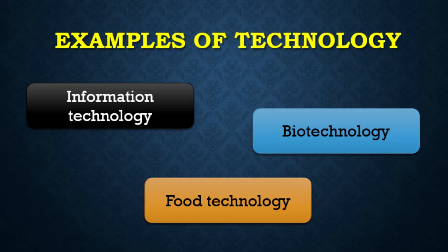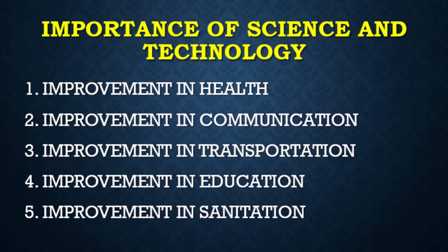Through science and technology there has been an improvement in health, as a result of the production of new vaccines and drugs to fight against deadly diseases such as HIV/AIDS, poliomyelitis, measles, smallpox, and chickenpox. Machines like the X-ray machine help to diagnose patients. There has also been an improvement in communication through the use of telephones, mobiles, electronic mail, fax machines, and the internet.